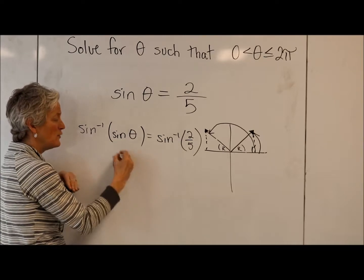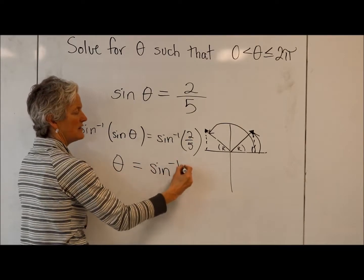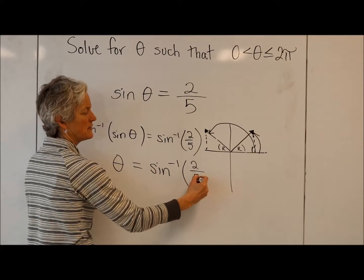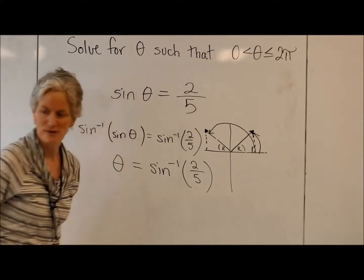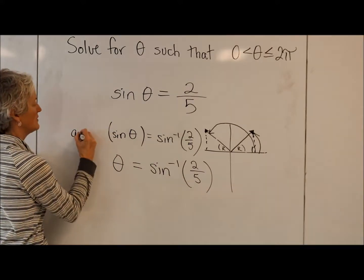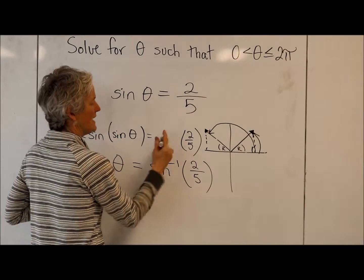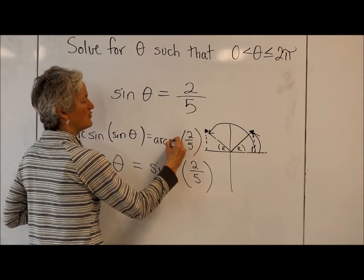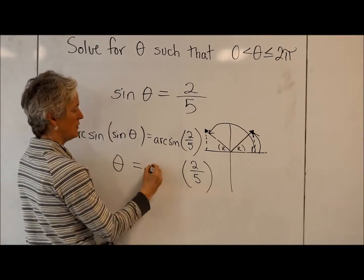So you're just left with theta equals sine^(-1) of 2 fifths. I guess I said earlier I wasn't going to use that notation, so let's say arc sine instead. But again, it doesn't matter what notation you like, I will use this notation.